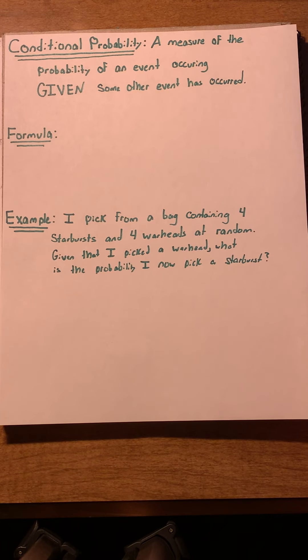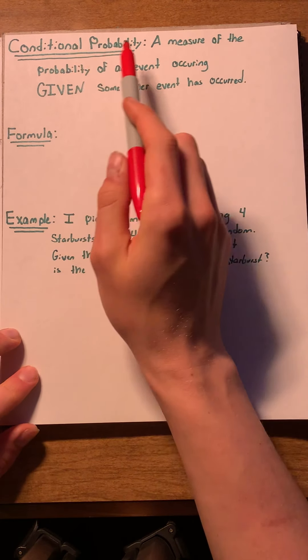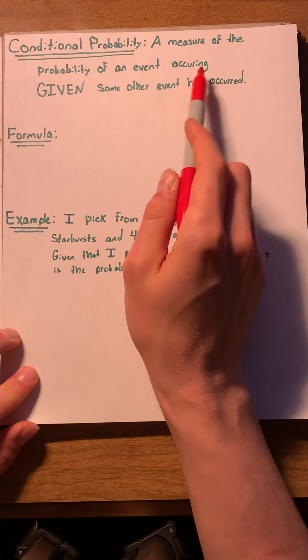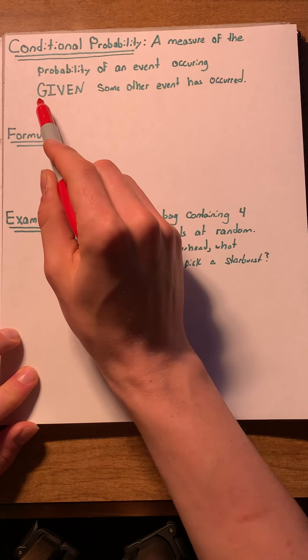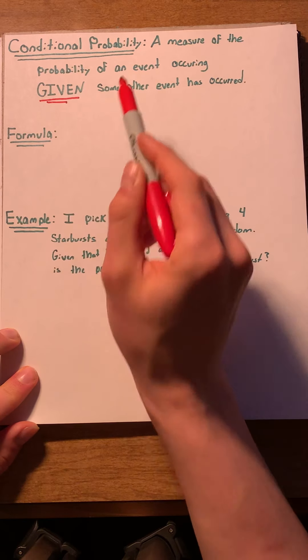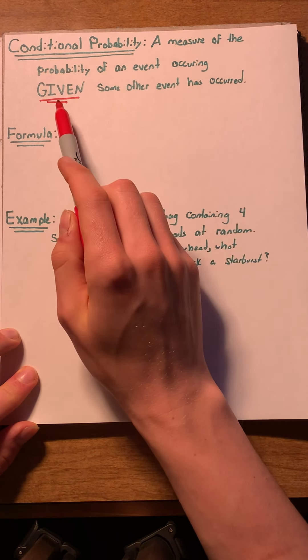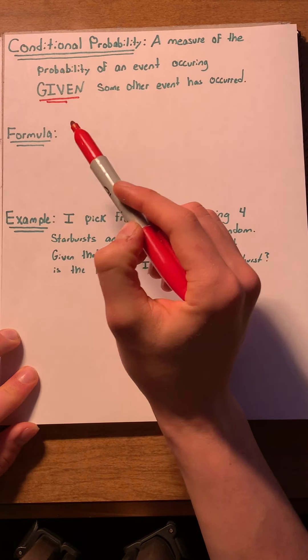Let's start with the definition of conditional probability. Conditional probability is a measure of the probability of an event occurring given—make sure to emphasize given—some other event has occurred. When we see the word given, we know that we're working with conditional probability.